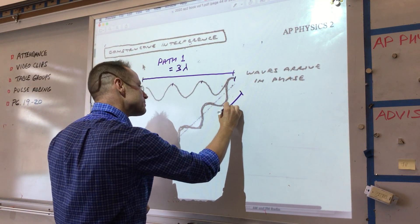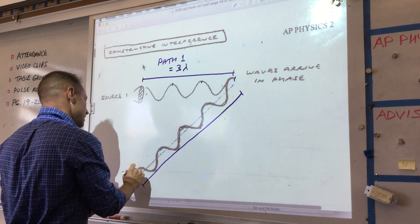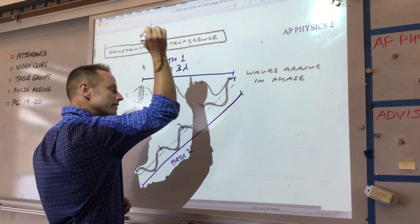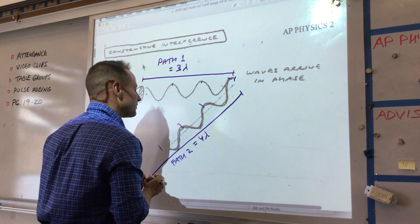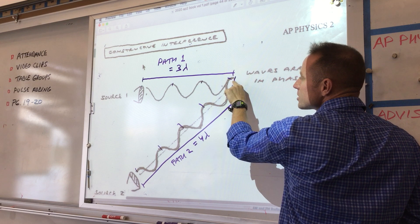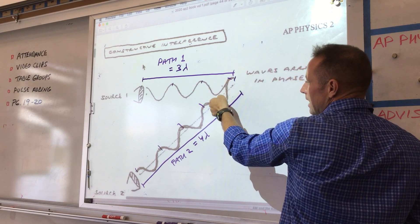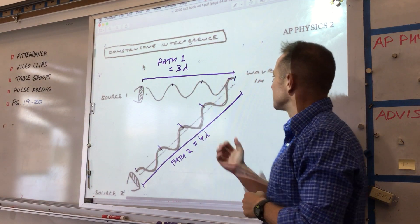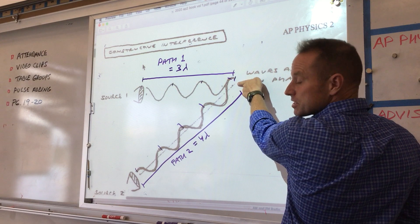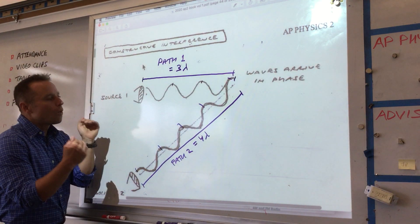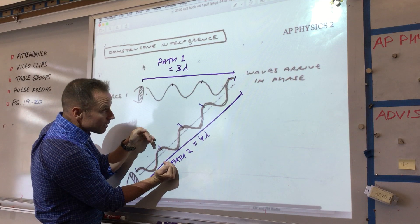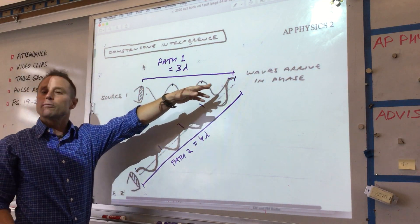Now let's look at the other path — path two. Counting here: one, two, three, four — path two equals four lambda. At this instant the peaks are arriving at this point, but if we wait a little bit, the valleys will also arrive at the same time. Being loud is not just about peaks arriving; the valleys also need to arrive at the same time. So the waves are doing the same thing at the same time at this place.